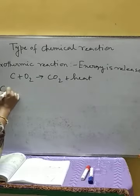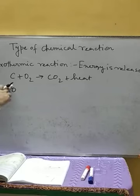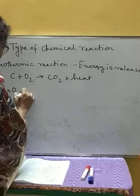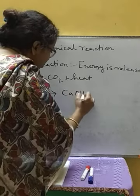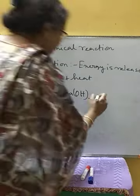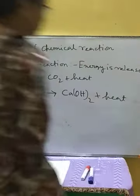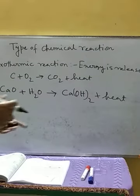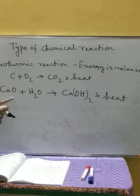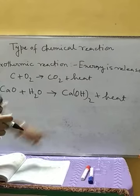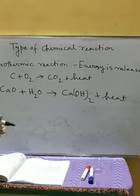Another exothermic reaction is the reaction of calcium oxide — quick lime. If we add water to quick lime, we get slaked lime, that is calcium hydroxide Ca(OH)2, along with heat. So this is a kind of exothermic reaction.